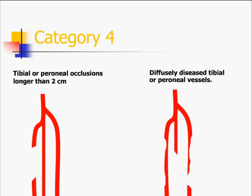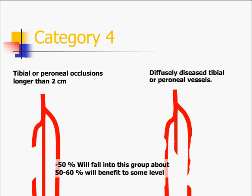Category 4 includes tibial or peroneal occlusions longer than two centimeters, or diffusely diseased tibial or peroneal vessels. About 50 percent of our practice falls under this group, and about 50 to 60 percent of these will also benefit to some extent after percutaneous revascularization.